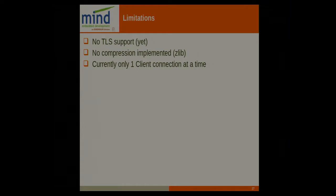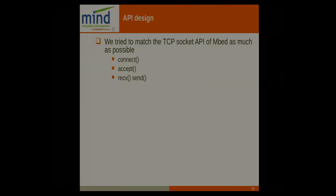Currently the library is also limited to only one connection at a time, so only one app can connect over the internet to your gateway simultaneously. We need to implement some sort of parallelism to allow multiple connections. As for the API, we tried to make it as similar as possible to setting up a TCP socket connection in mbed.